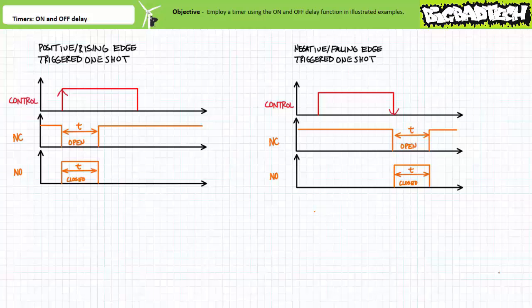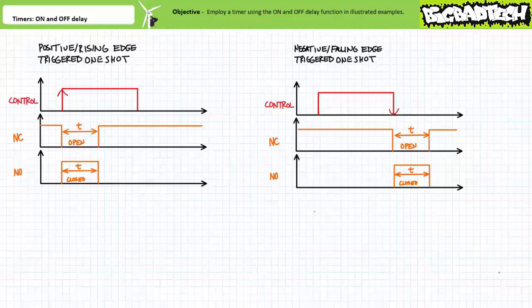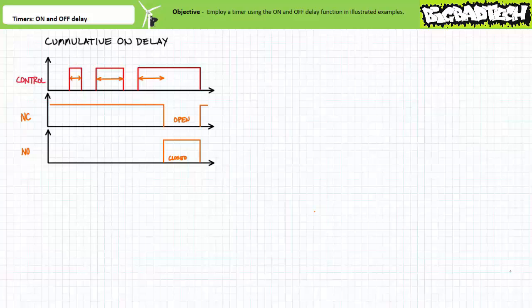Finally, compare this behavior to a timer executing the cumulative on delay function. A cumulative on delay timer is a record-keeping function where the timer keeps track of how long its controlling input has been energized. Only after the controlling input has been asserted for the predetermined period of time do the outputs respond — despite the controlling input being discontinuously energized. Such a timer could be used to track how long a controlling input has been asserted and alert the system that maintenance must occur. I like to think of cumulative on delay timers as little accountants that keep track of how long the controlling input has been asserted.